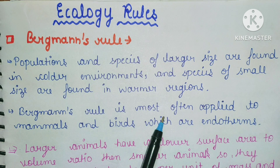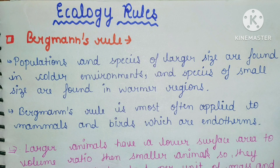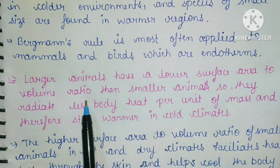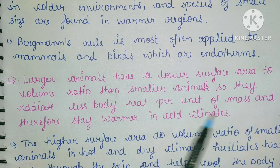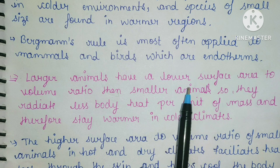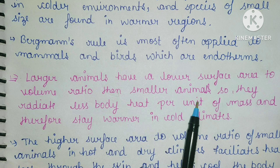Bergmann's rules are most often applied to mammals and birds, which are endotherms. Larger animals have a lower surface area to volume ratio than smaller animals, so they radiate less body heat per unit of mass and therefore stay warmer in cold climates.